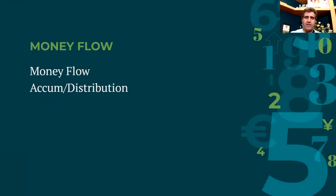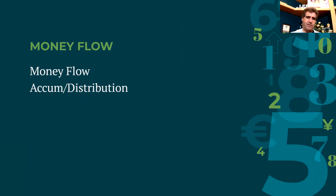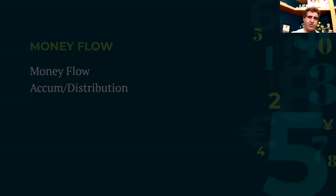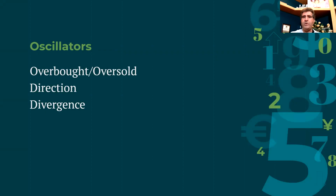Money flow indicators take volume into consideration. There's the Money Flow Index based on closing price, and the Accumulation/Distribution line, which is cumulative and shows the flow of money. The difference between them is that Money Flow looks at the closing price, while Accumulation/Distribution looks at the price range and volume. These are important for seeing if there's enough strength behind a move — whether money is accumulating or distributing.